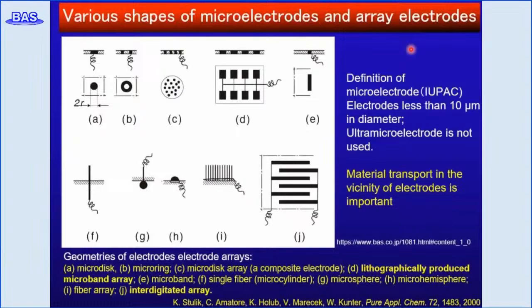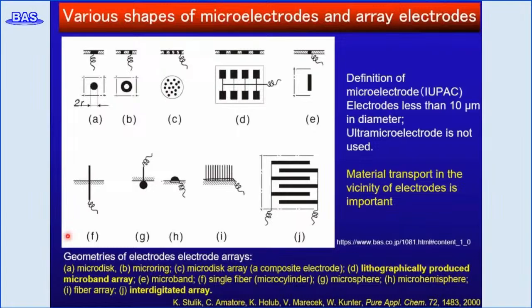This slide shows the basic types of microelectrodes and their geometries. The most important factor determining electrode behavior is mass transport in the solution near the electrode. From left: microdisk electrode, microring electrode, microdisk array, and microband array electrode. Recently, advanced microfabrication technologies based on photolithography have made it possible to create microelectrodes of various shapes. In particular, microband array or interdigitated array (IDA) electrodes are useful for measuring the electrochemical properties of nanoscale materials. Depending on the electrode shape, the diffusion of analyte changes, which affects the voltammogram shape.